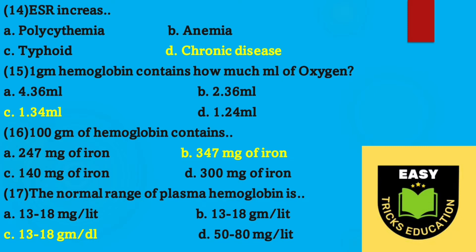Question number fifteen: 1 gram of hemoglobin contains how many milliliters of oxygen? Option C, 1.34 milliliters. Question number sixteen: 100 grams of hemoglobin contains — correct answer option B, 347 milligrams of iron.